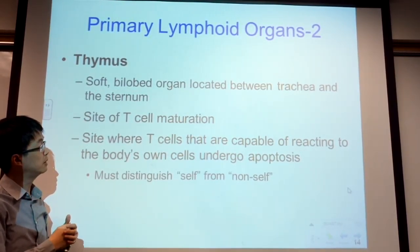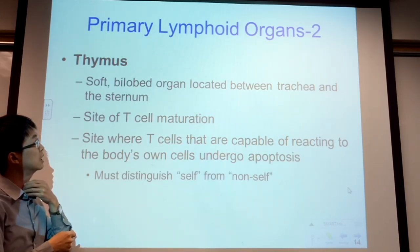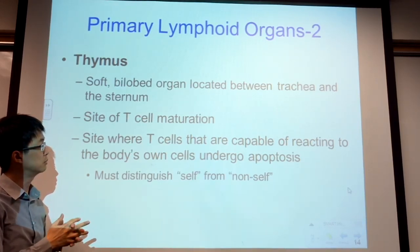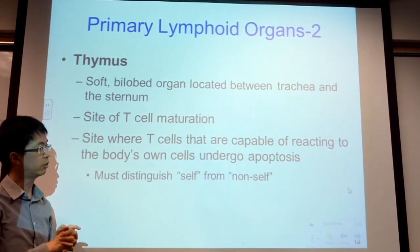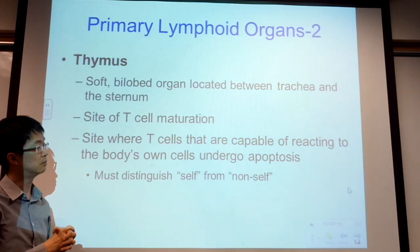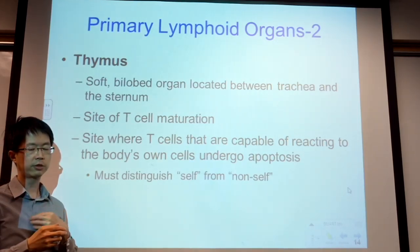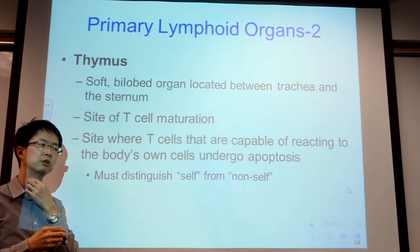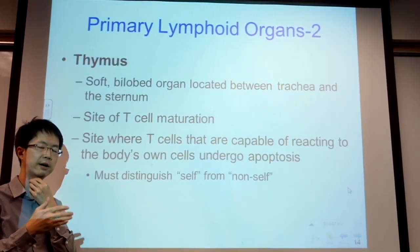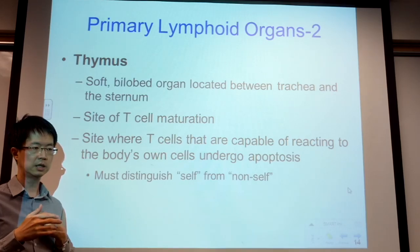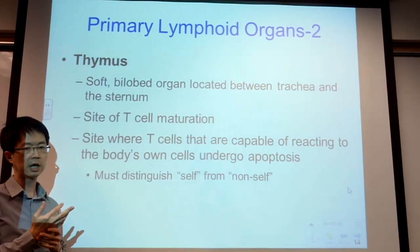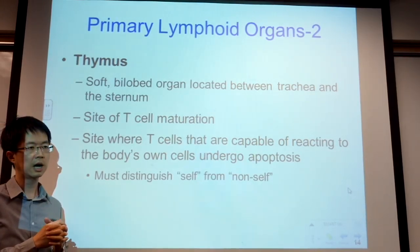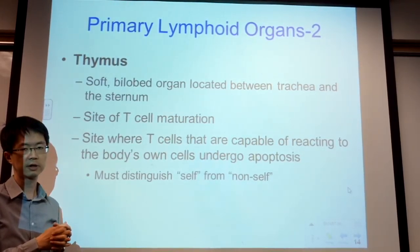The thymus is located between the trachea and sternum. Don't confuse the thymus with the thyroid — the thyroid is on the surface of the larynx, while the thymus is deeper. In adults, the thymus degenerates significantly; it is most active in newborns.